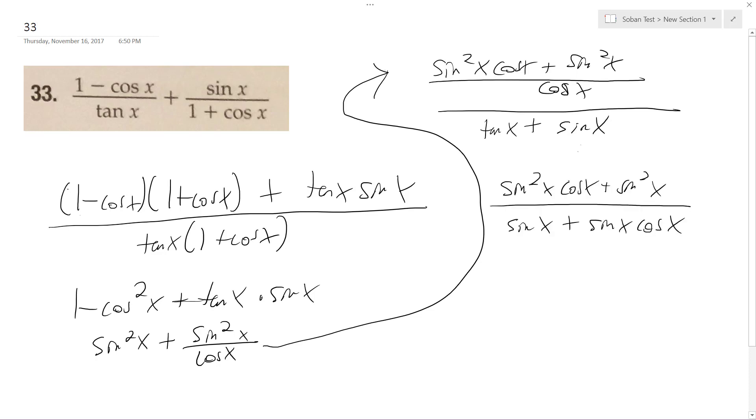All right, I just looked over some things, so moved it down here. I'll factor out sine squared x, so I get cosine x plus 1 over sine x.